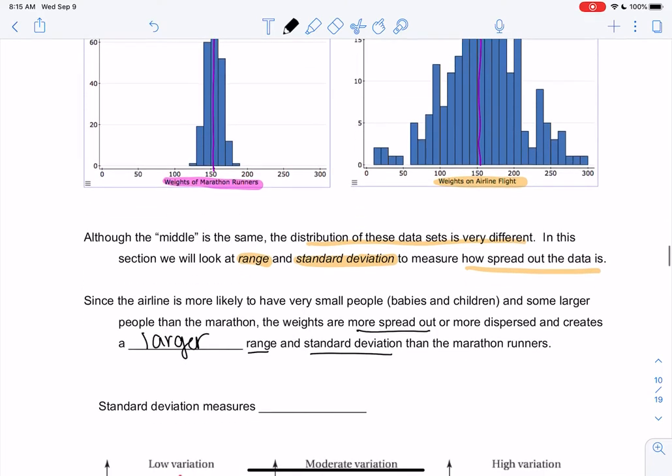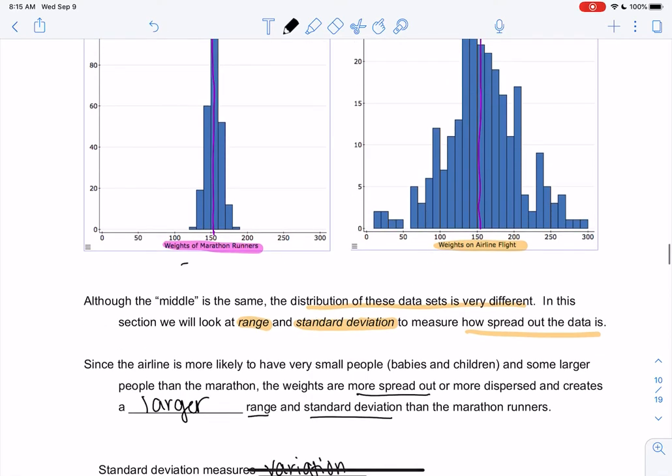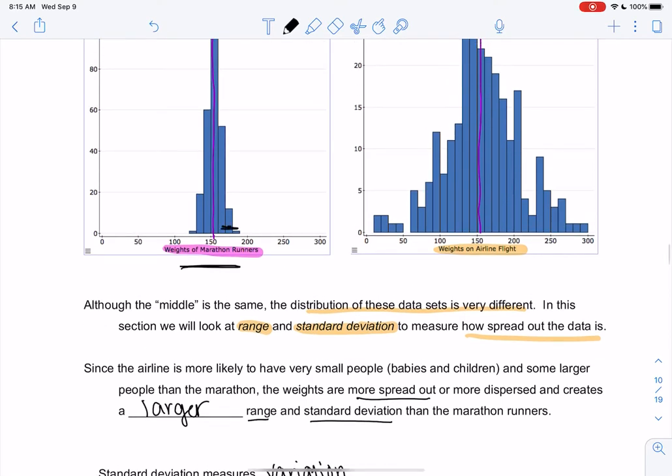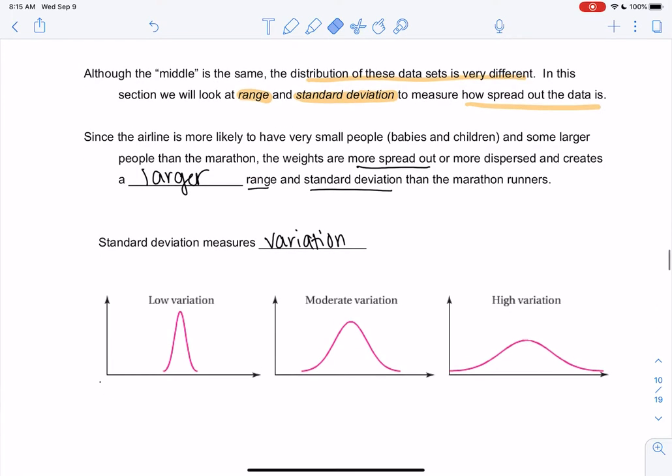Standard deviation measures variation. So how much does the data vary? The marathon runners only vary a little bit because it only goes over a little, versus the flight varies more. And so we can see that below. This is variation. As the graph gets wider, we have more variation. So let's figure out how to calculate this, and then we'll have the calculator do it.